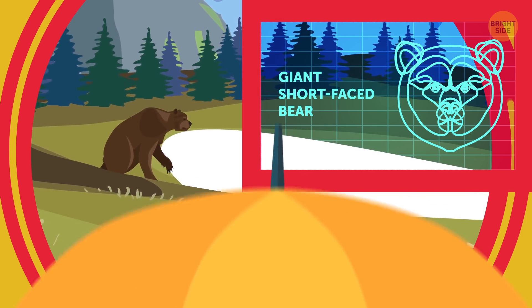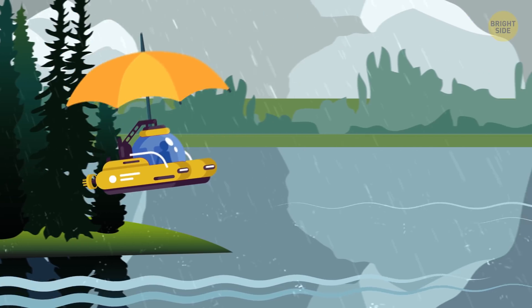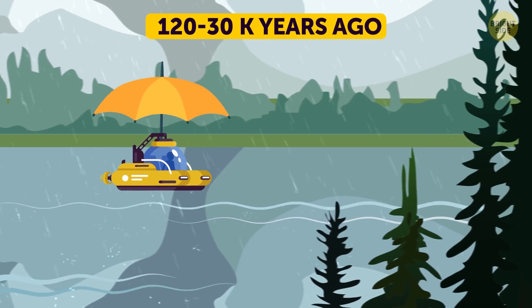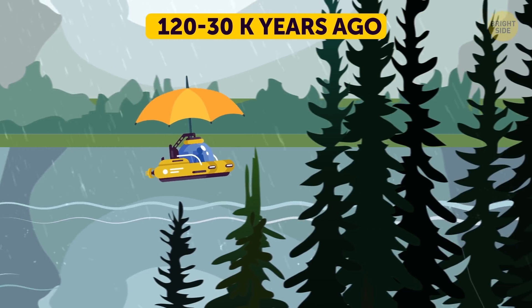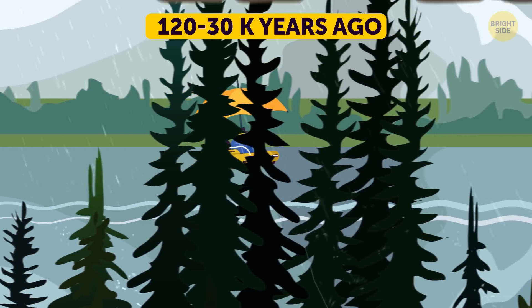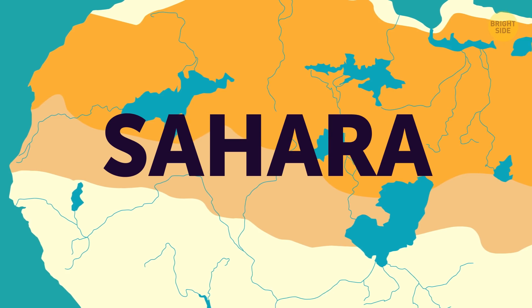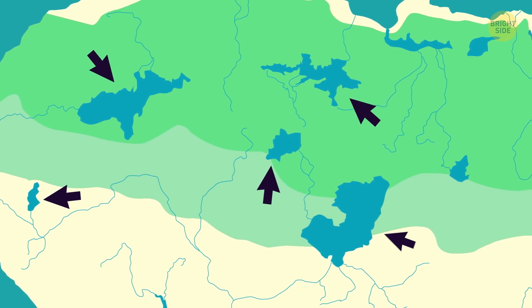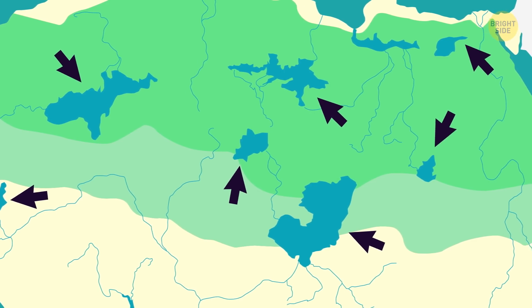Can I borrow that umbrella again? Thanks. I guess I'll need it for a while. In the period between 120,000 and 30,000 years ago, it rains cats and dogs, and maybe mammoths too. Even the Sahara becomes wet and fertile. Look at all those lakes, swamps, and rivers. Yep, it's another warming.